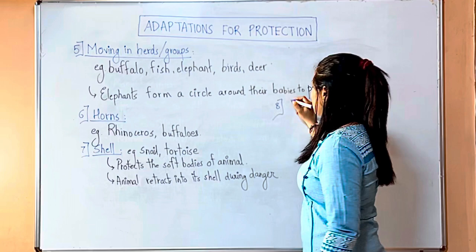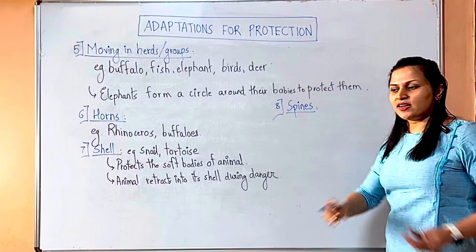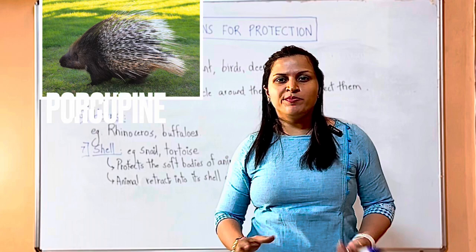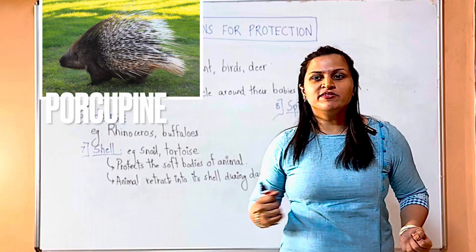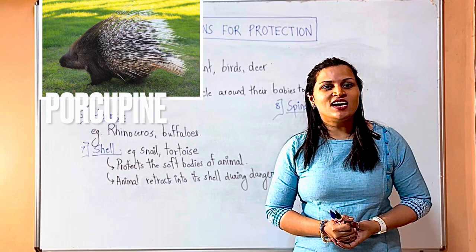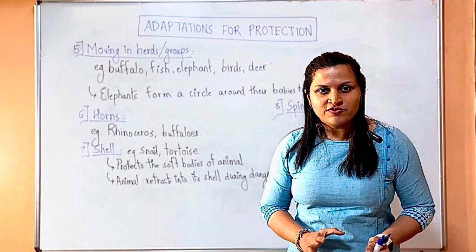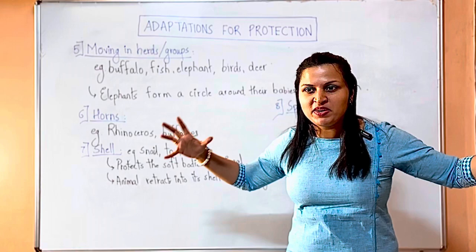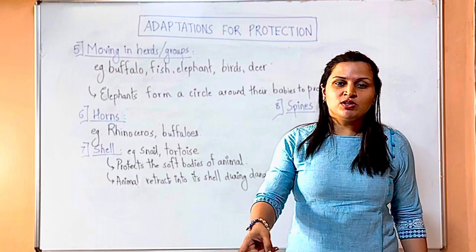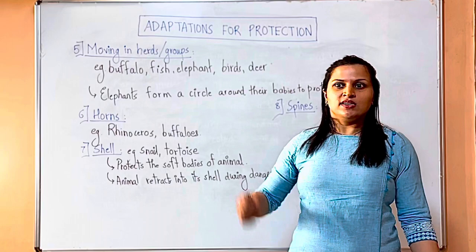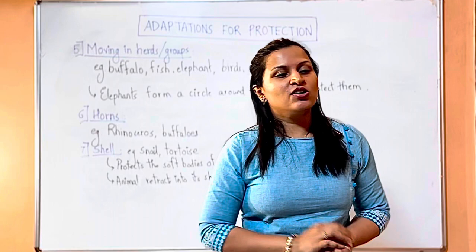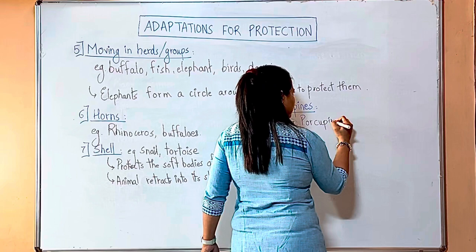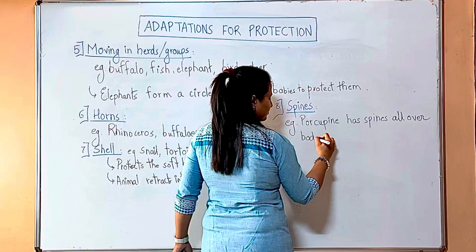Some animals have spines all over their bodies — like big long thorns. The porcupine has spines all over its body. During approaching danger it will first make its spines very upright, making itself look big-sized, scaring the enemy away. If the enemy still approaches, the porcupine actually shoots its spines, which hit, prick, and injure the attacker. These spines are used to attack the enemy.